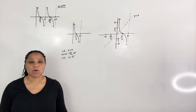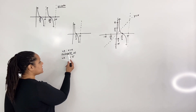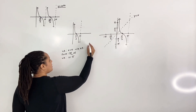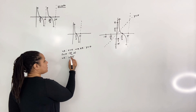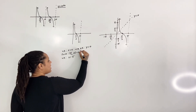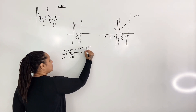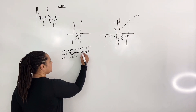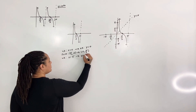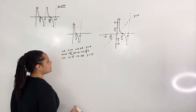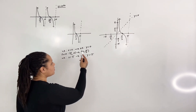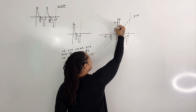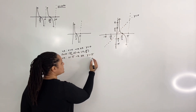Step 4: swap the x and y values. If we have a vertical asymptote at x equals 0, then we're going to have a horizontal asymptote at y equals 0. If we have a point at (pi over 2, 0), then swapping our x and y values, it will become (0, pi over 2). If we have a vertical asymptote at x equals pi, then it will become a horizontal asymptote at y equals pi. So, horizontal asymptote at y equals 0, point at (0, pi over 2), and horizontal asymptote at y equals pi.